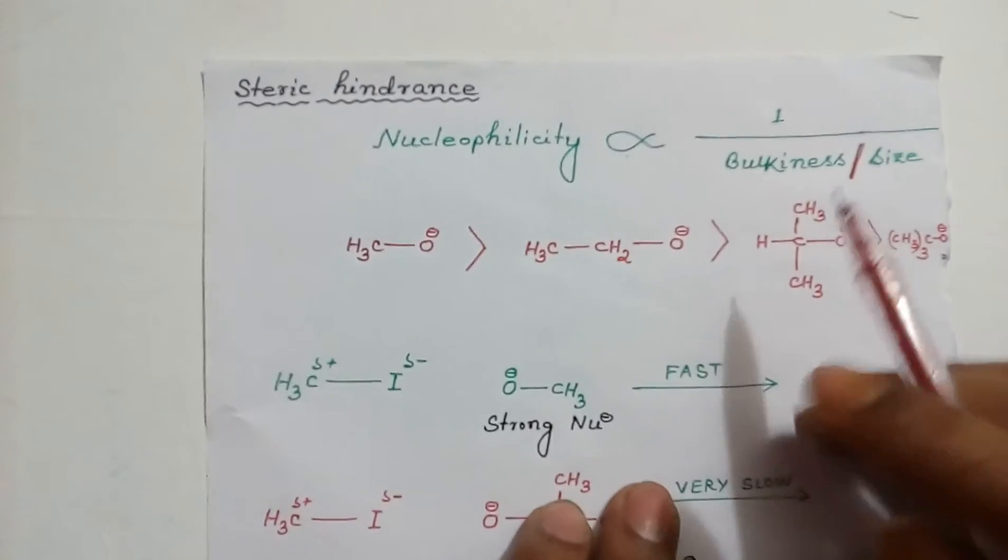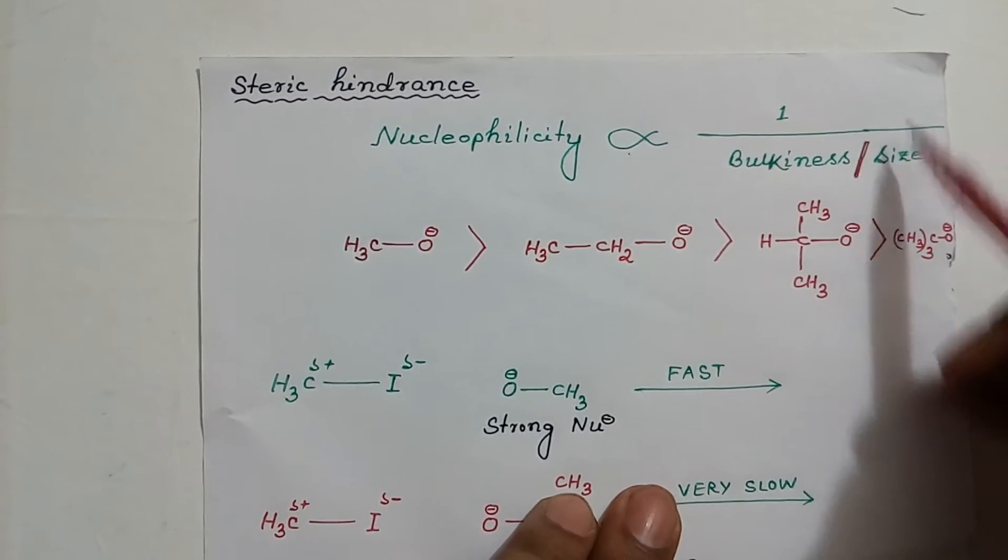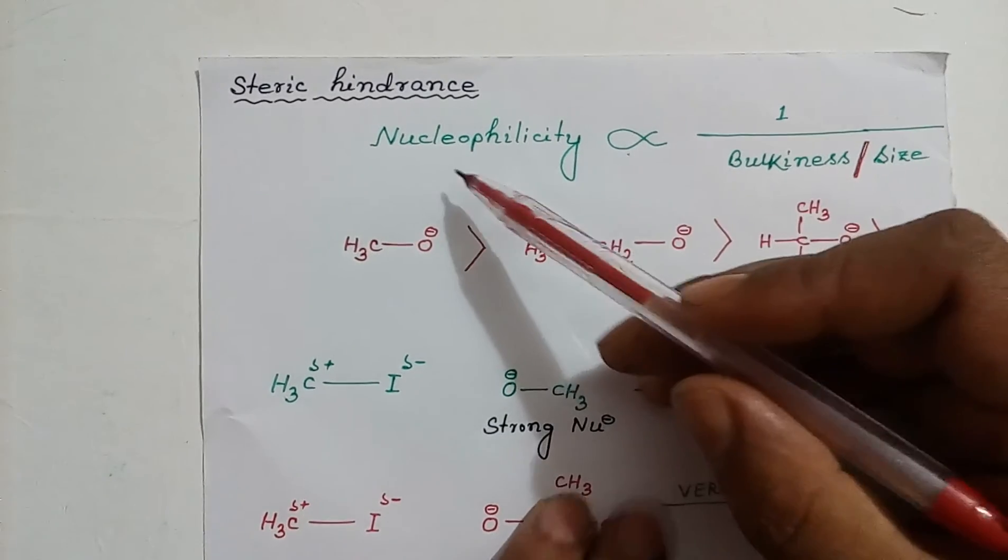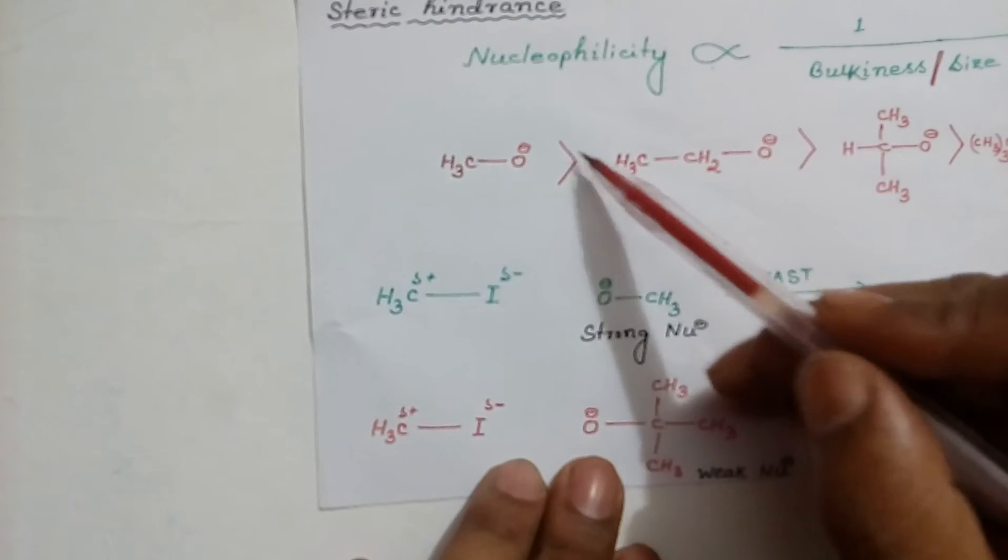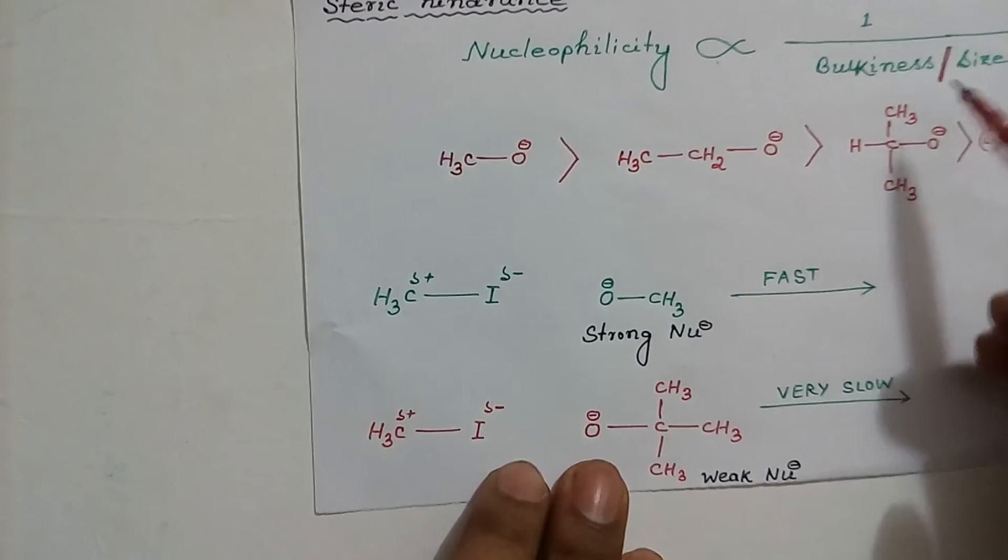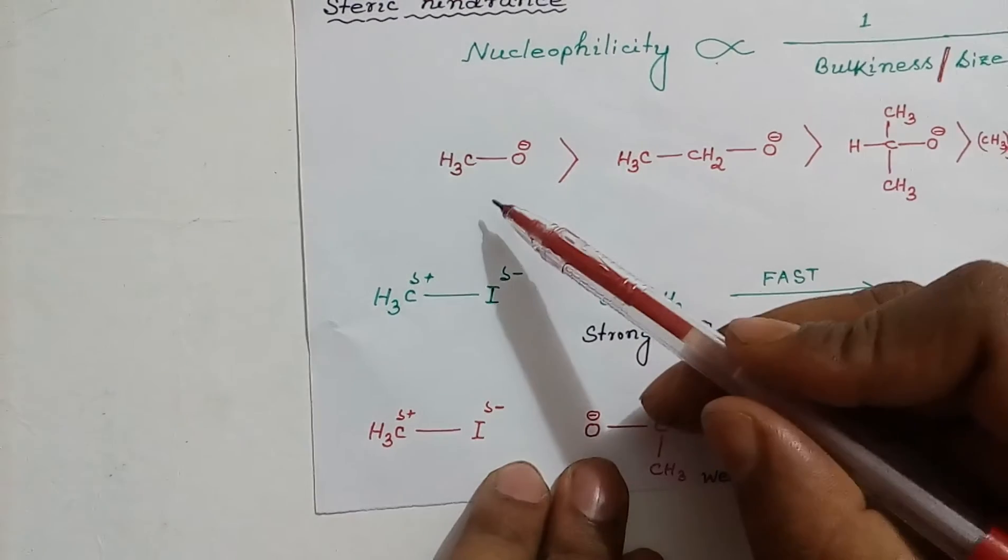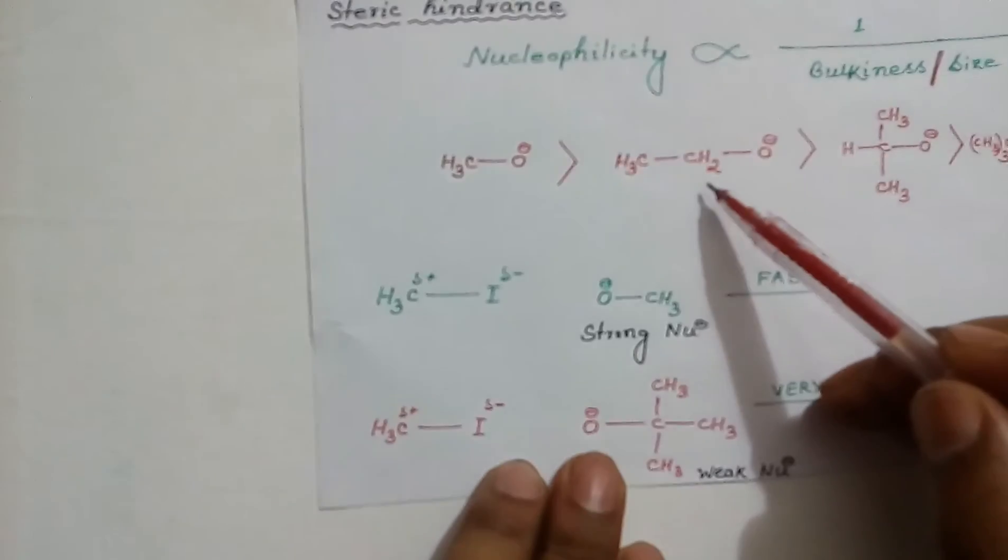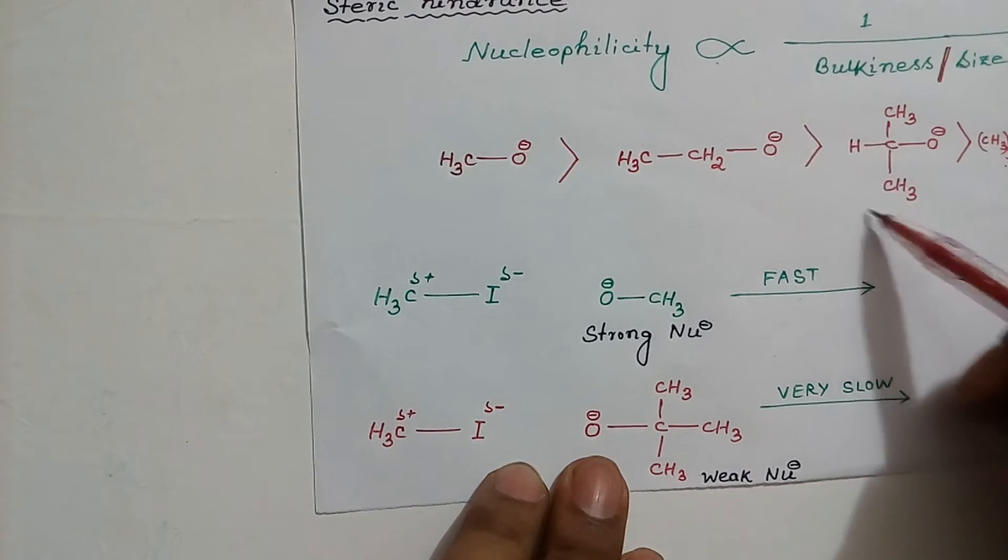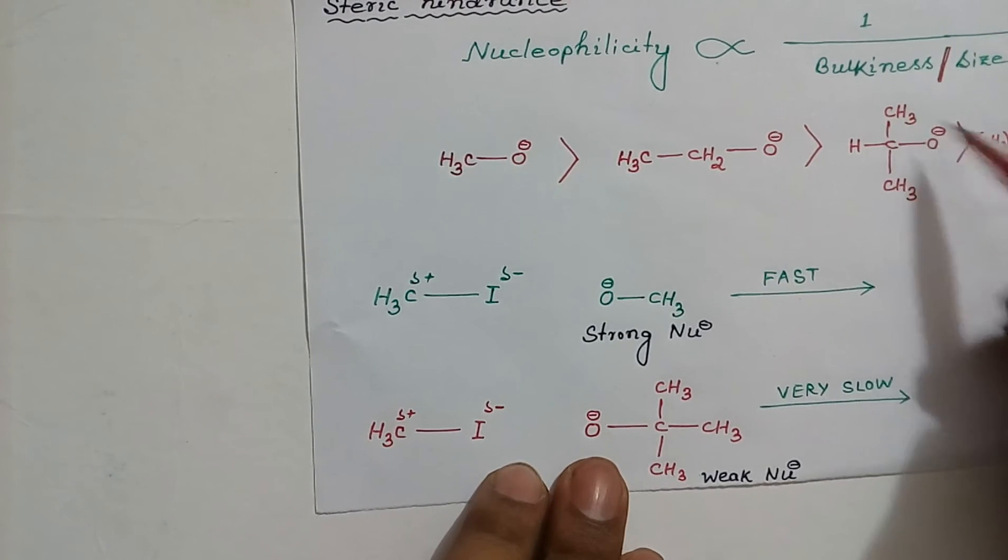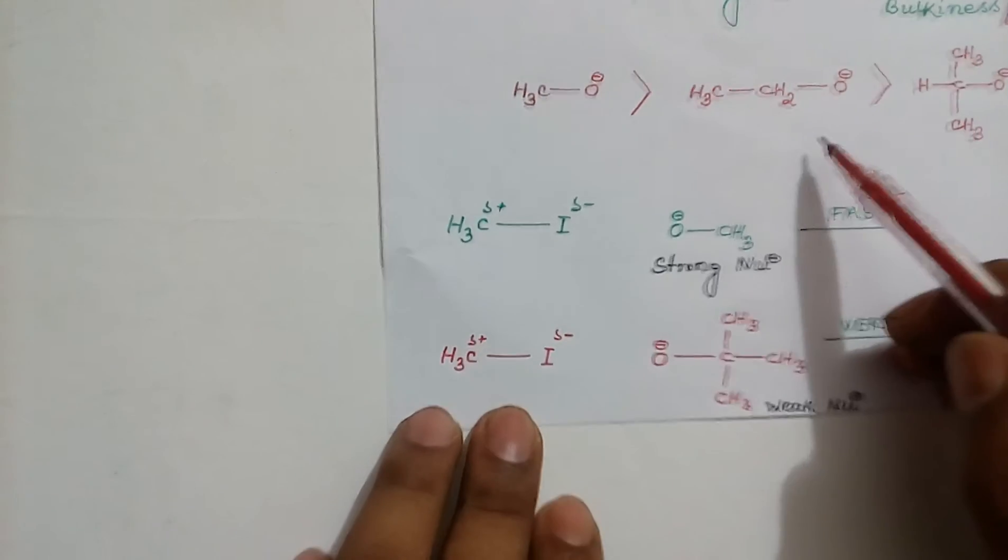Steric hindrance. More the bulkiness or size of some group or atom, weaker will be its nucleophilicity. Methoxide is more nucleophilic than ethoxide, then isopropoxide, then tertiary butoxide. Nucleophilicity is decreasing because the bulkiness or the size of alkyl group is increasing. Bigger the alkyl group, more is the hindrance to approach the electrophilic center. And hence, decreases its nucleophilicity.